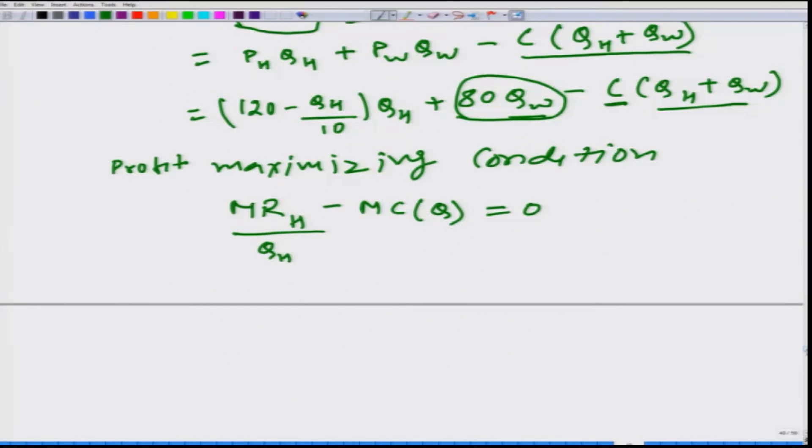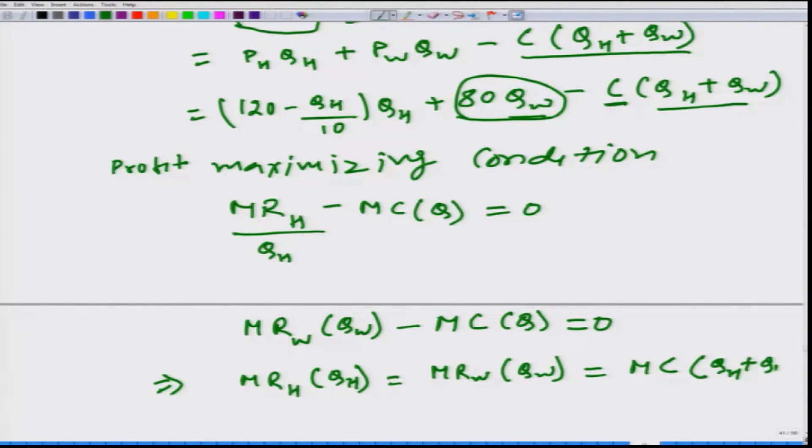We will try to explain this again without using any calculus and similarly what we get is MRW at QW has to be equal to MC of Q, it has to be equal to 0. And so therefore, we get MRH at QH has to be equal to MRW at QW, which has to be equal to MC at QH plus QW.